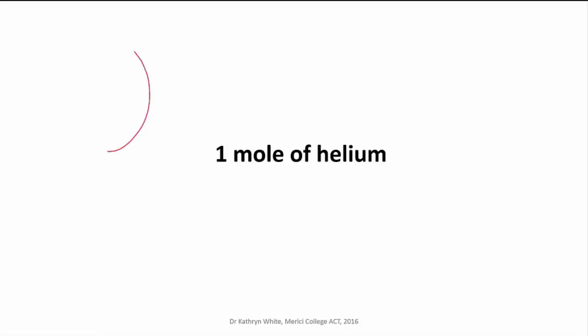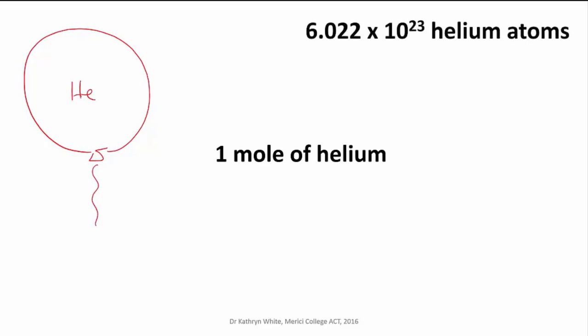Okay, so if you are given a big balloon containing a mole of helium, there are a couple of things you can immediately work out. You would know that because of Avogadro's constant, there are 6.022 times 10 to the 23 atoms of helium in the balloon.